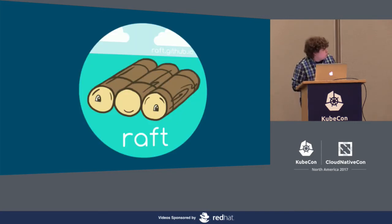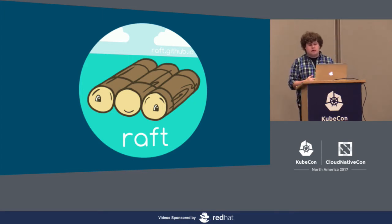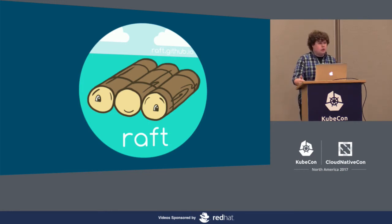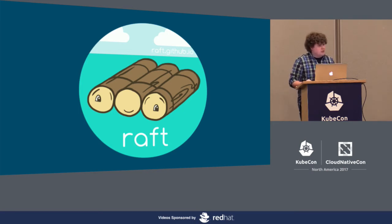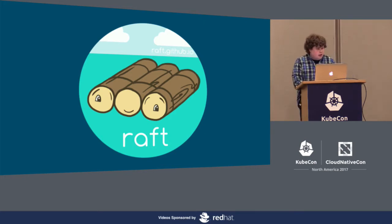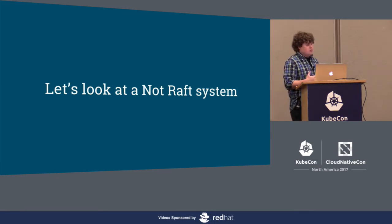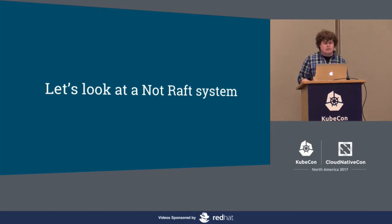How does etcd agree on the value for a given key while upholding its consistency guarantee? It's the Raft algorithm. The Raft algorithm is a method of achieving distributed consensus — having multiple distributed servers agree on what the value is for a given key in a fault-tolerant manner. To illustrate the difficulties, let's look at a not-Raft system specifically designed to show how distributed consensus can be hard. Don't go implement this and run it in production.